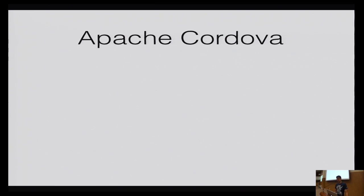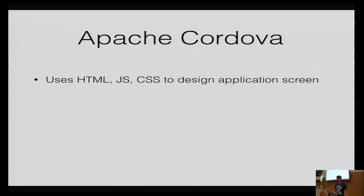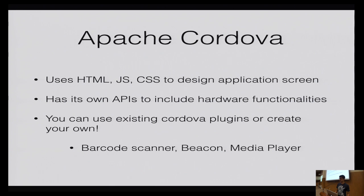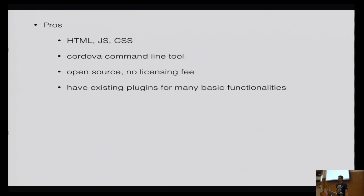Let's talk about Cordova — it's pretty popular and a lot of people know it as PhoneGap. It uses HTML, JavaScript, and CSS to design application screens, and has its own APIs for hardware functionality like maps, camera, and barcode scanning. You can use existing Cordova plugins; they follow a plugin architecture where you can add additional functionalities. Pros: you can use HTML, JavaScript, and CSS; there's a command-line tool to build for iOS and Android; it's open source with no licensing; and there are many existing plugins for basic functionality.